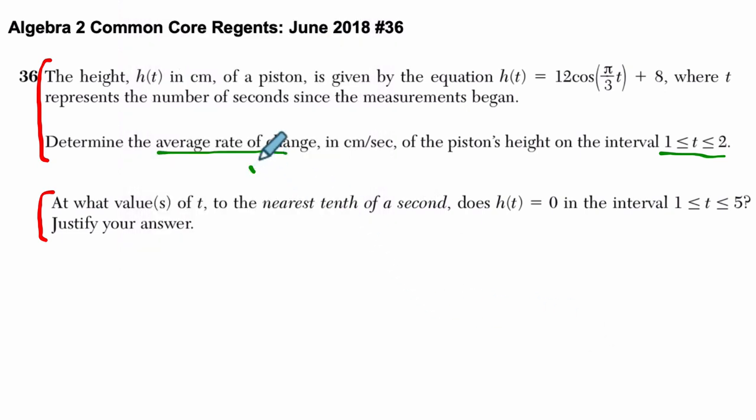We're finding the slope between the points (1, 14) and (2, 2). To find the slope, we do the difference of the outputs, 2 minus 14, over 2 minus 1, the difference of the inputs. That's just negative 12 over 1, so the answer is negative 12.